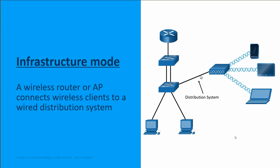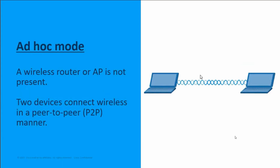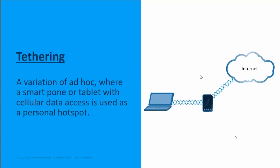Switching over to ad hoc mode — much more basic. With ad hoc mode we're talking peer-to-peer: two devices connecting wirelessly without any network infrastructure, without any wired distribution system. A good example would be two phones directly connected to each other, maybe sharing a file using technologies like Bluetooth or AirDrop — 802.11 coming into play. That's ad hoc: no infrastructure device, directly device-to-device, peer-to-peer.